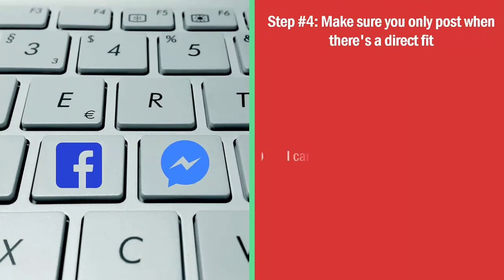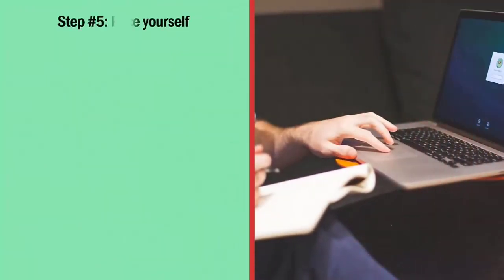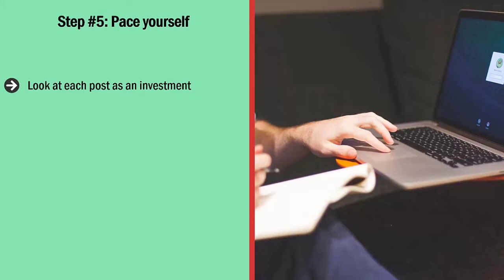Step number four: make sure you only post when there's a direct fit. You must only post comments on blog posts that directly fit your niche, and there must be a natural progression from your level one content to whatever content you're commenting on. Step number five: pace yourself and look at each post as an investment. It will take time to craft a winning comment — you can't rush or post garbage. Each comment should be at least 200 to 300 words if you're doing this right.